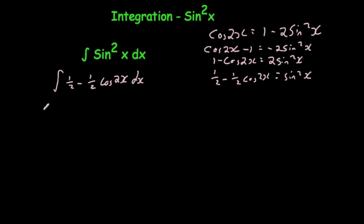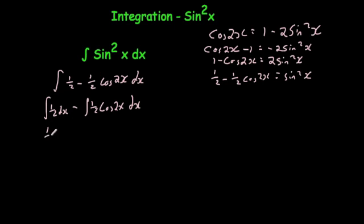Now let's split this up into two separate integrals: the integral of one half with respect to x, minus the integral of one half cos 2x with respect to x. We can take the half outside to get one half times the integral of cos 2x. Remember, if you've got a number at the front you can just take it outside.